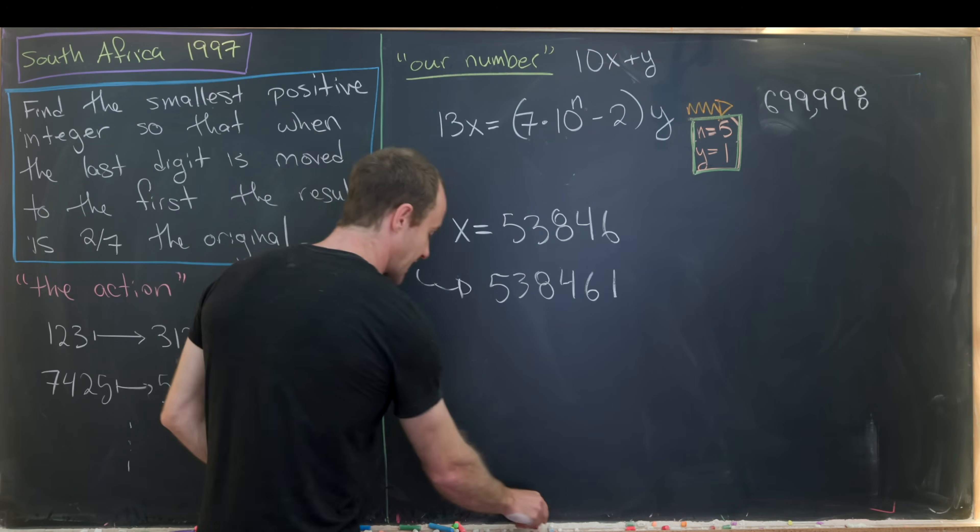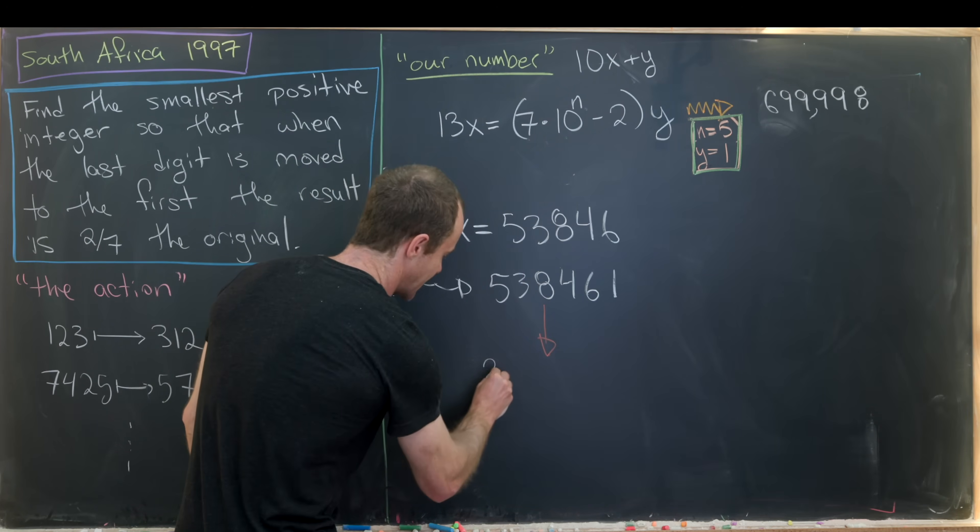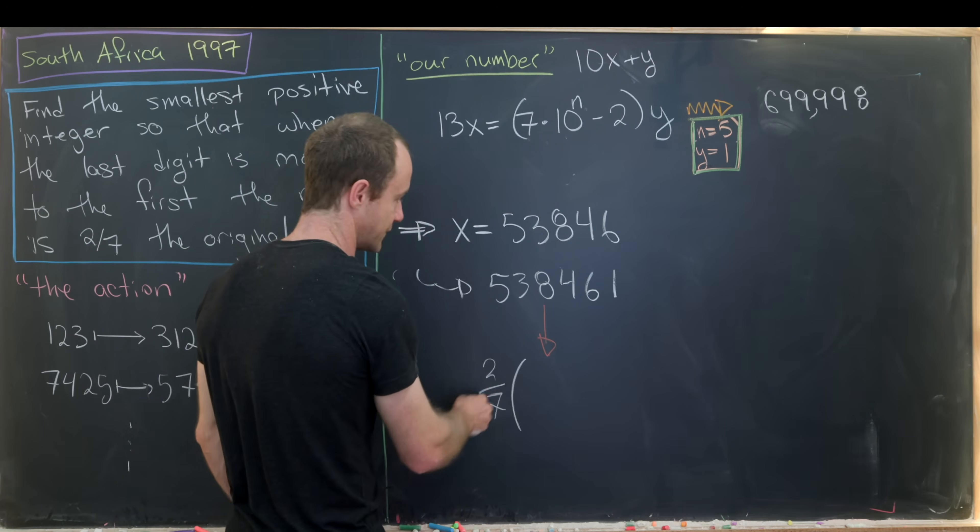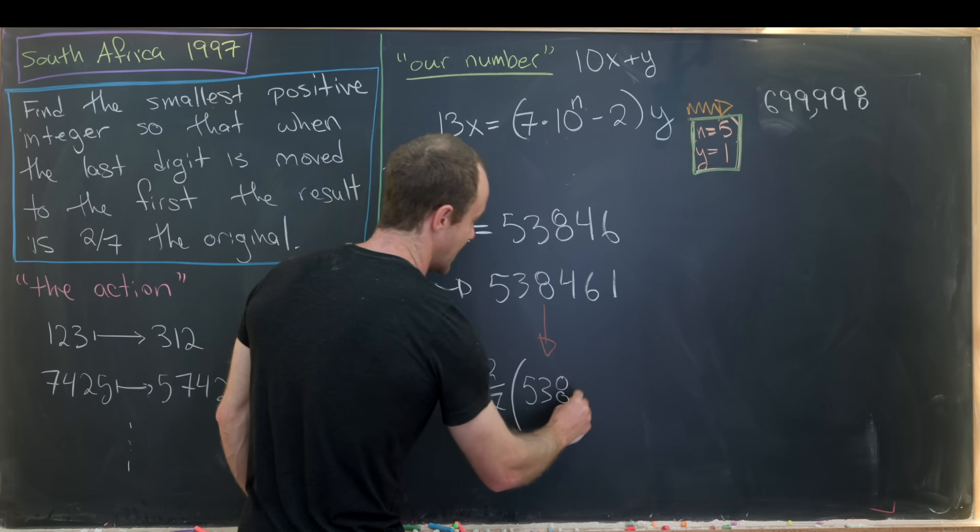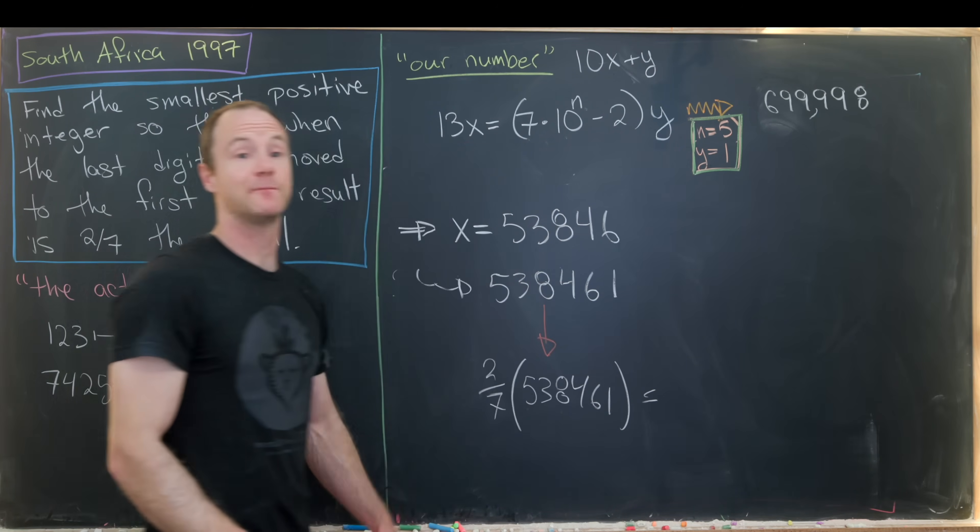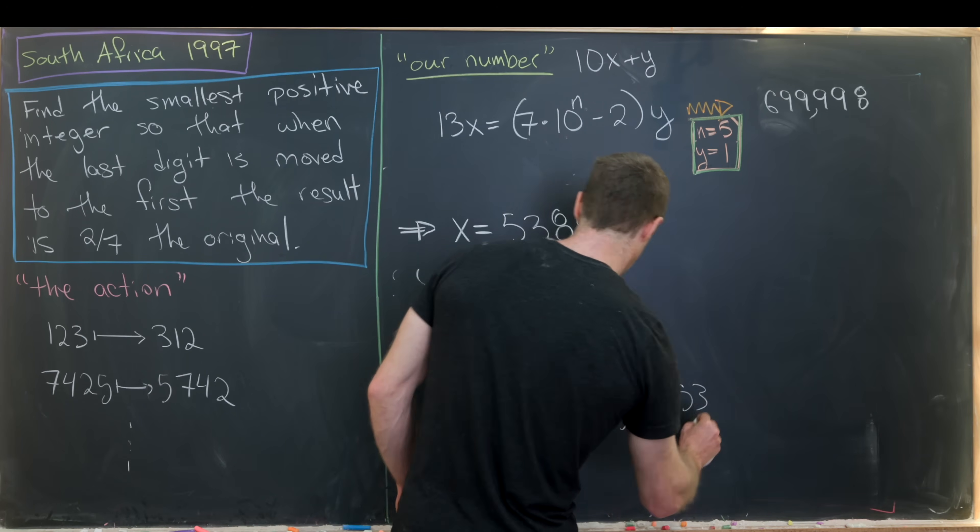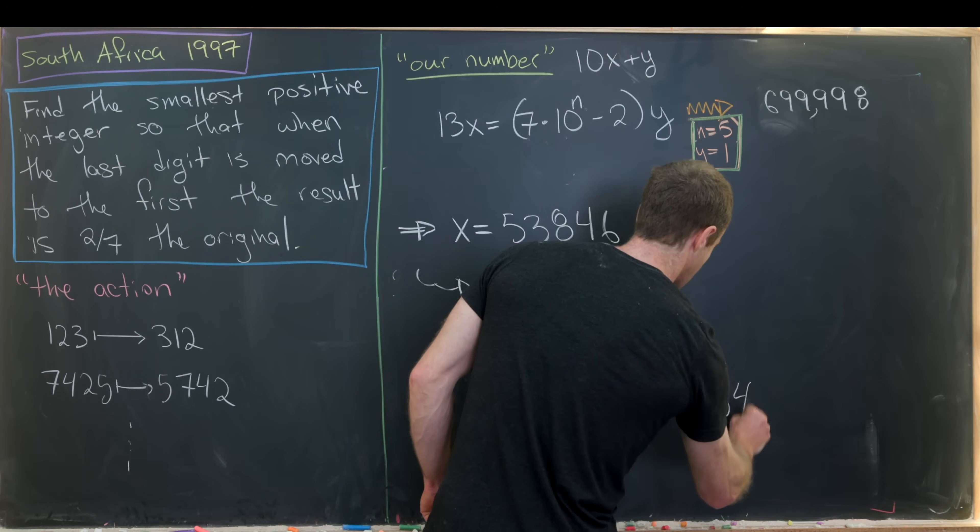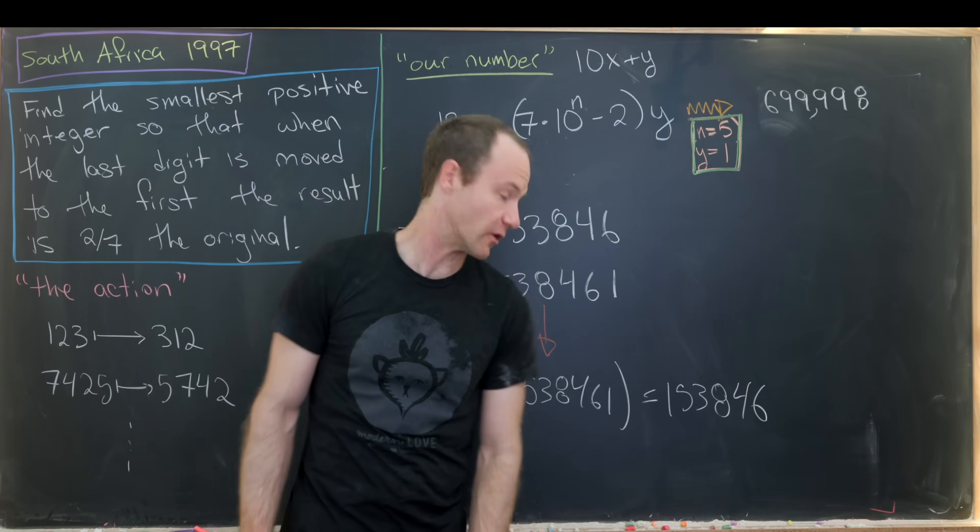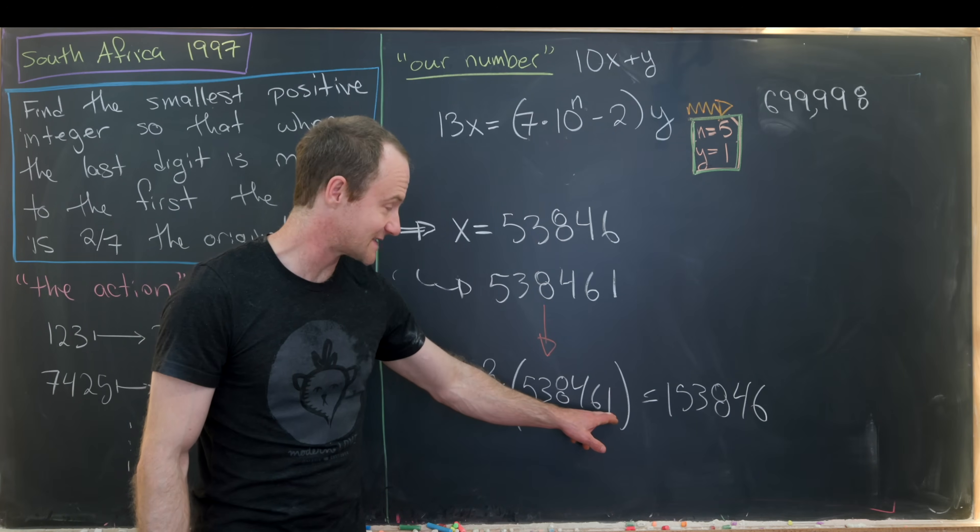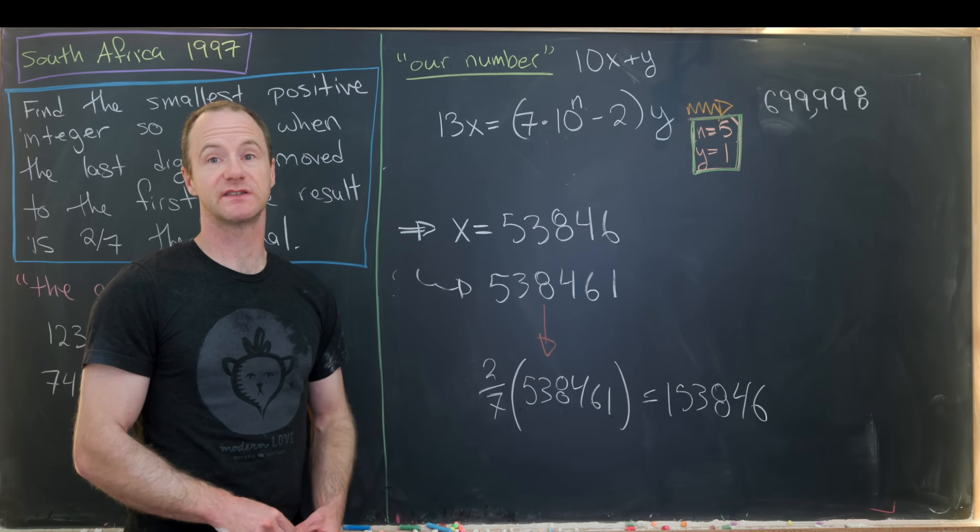And then just to check that this all works, let's multiply this thing by 2 over 7. So if we take this and multiply it by 2 over 7. So 5, 3, 8, 4, 6, 1. Well, checking all the details, what you'll get is 1, 5, 3, 8, 4, 6. But that's exactly the action that's described over here. Notice that this last digit is moved up to the first position. And that's a good place to stop.